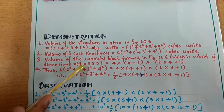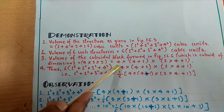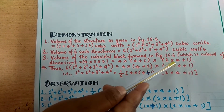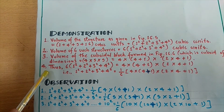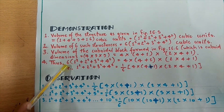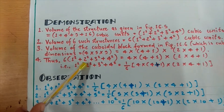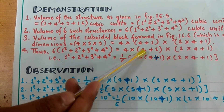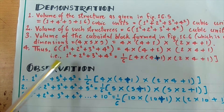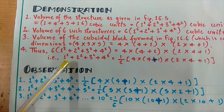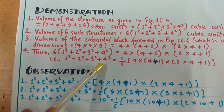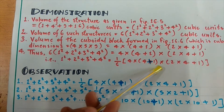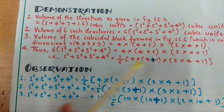Volume of the cuboid is equal to 4 into 5 into 9, also written as 4 into (4 plus 1) into (2 into 4 plus 1). Thus, by equating: 6 into (1 squared plus 2 squared plus 3 squared plus 4 squared) is equal to 4 into (4 plus 1) into (2 into 4 plus 1). That can also be written as 1 squared plus 2 squared plus 3 squared plus 4 squared equals (1/6) into 4 into (4 plus 1) into (2 into 4 plus 1).